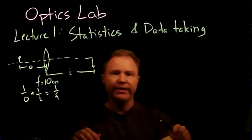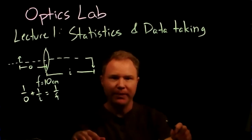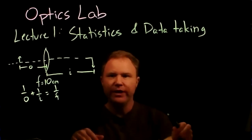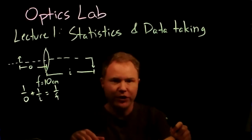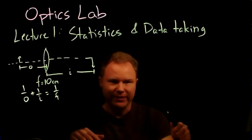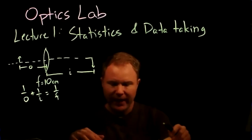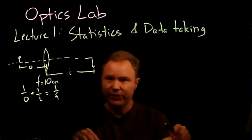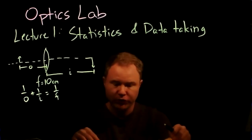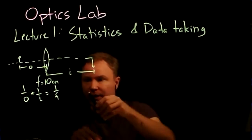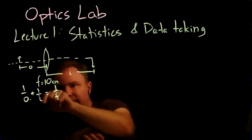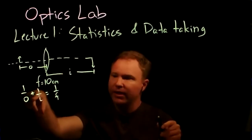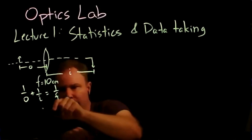One of the things I really want to emphasize in Optics Lab is that if you can turn an experiment into a linear relationship, your life is a lot easier and doing the data analysis is usually a lot simpler and more straightforward. So what we will actually do is make a plot not of the independent variable O, but of 1/O.